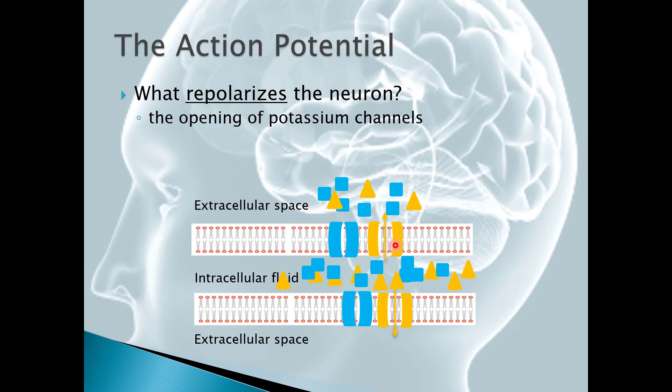So as those potassium channels open up, where does that potassium want to go? It wants to go outside because now remember the outside is negative. Potassium has a positive charge. It's attracted to that negative charge. So that's the electrical gradient. There's also a high concentration of potassium inside. And of course that concentration gradient makes it want to diffuse out into the extracellular space.